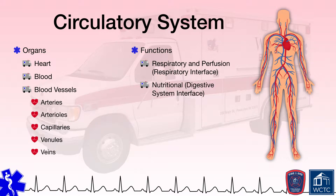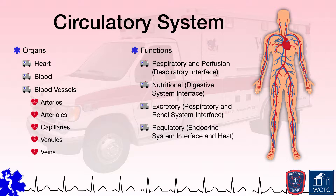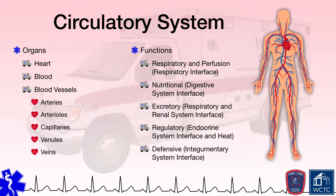The blood also carries nutrients, carbohydrates, proteins, and fats obtained through our digestive system to feed our body's tissues, and it removes metabolic waste products to the renal and respiratory systems for excretion from the body. The circulatory system works with the endocrine system to regulate the body by distributing chemical hormones throughout the body, and also plays an important role in regulating our body's internal temperature by increasing or decreasing circulation to the surface of the body. The blood within the circulatory system also carries defensive cells and antibodies to protect against infection and foreign organisms, while also carrying platelets that stop bleeding and help repair the skin.